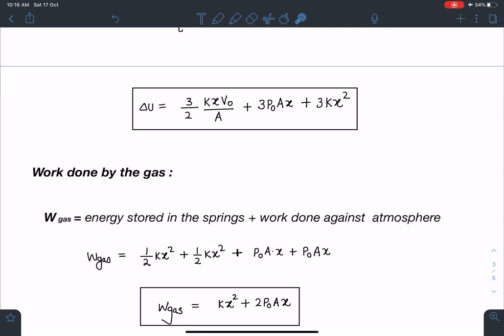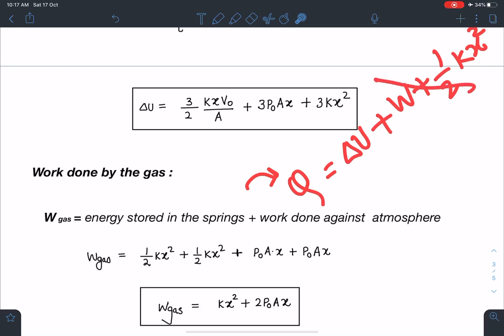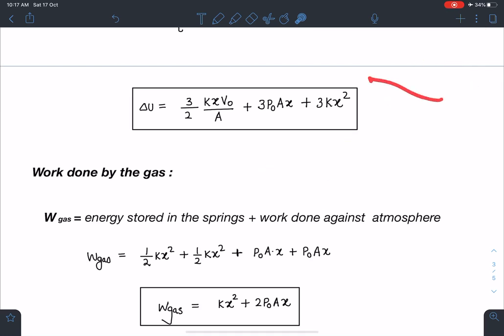Here also a lot of students I have seen, they make mistake when springs are present in the piston. What they do is they write that energy supplied Q, one part of this is internal energy change, one part is doing work, and one part is storing potential energy. This is totally wrong, by the way, this is totally wrong. In fact, the work done by the gas only, it will, one portion of that will be storing energy into the system and one portion will be doing work against the atmosphere. So please be careful about this fact.